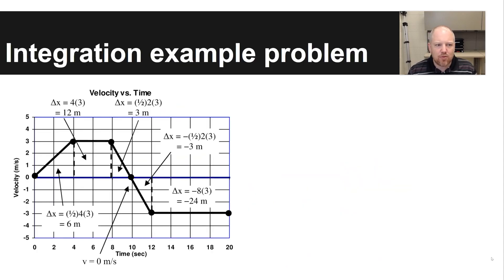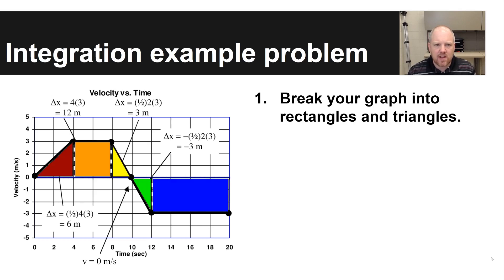So just an example of an integration problem is shown here. Just kind of worked out, but we're going to walk through it a step at a time. The first step you're going to want to take when you are integrating a graph, if you're taking a velocity versus time graph and you're trying to figure out what is your total change in position, would be to break your graph into rectangles and triangles where possible.